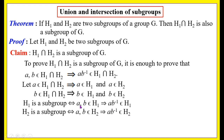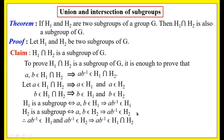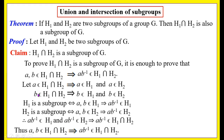Thus a, b belong to both H1 and H2 implies a·b⁻¹ belongs to H1 and a·b⁻¹ belongs to H2. Since 'and' is replaced by intersection, this implies a·b⁻¹ belongs to H1 ∩ H2. Thus a, b belong to H1 ∩ H2 implies a·b⁻¹ belongs to H1 ∩ H2, hence H1 ∩ H2 is a subgroup.